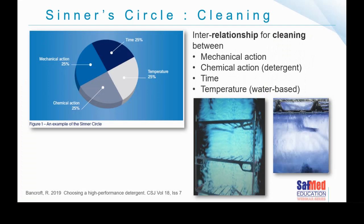When it comes to cleaning, there are four important things that need to happen — an interrelationship between four factors that will produce effective cleaning if they're all in the right balance. We require chemical action — a detergent that has effect on the bioburden we're trying to clean. We need some form of mechanical action — the rubbing and scrubbing required. Then the time, the contact time a device has with the detergent-water combination, and the temperature at which the water and detergent mix. If you have the wrong temperature, it can have a disastrous effect on cleaning efficacy and outcomes.